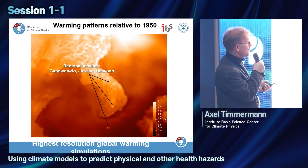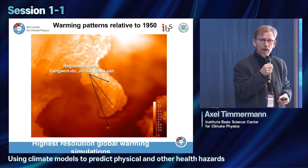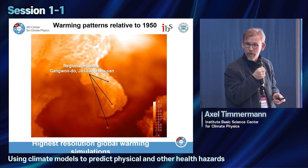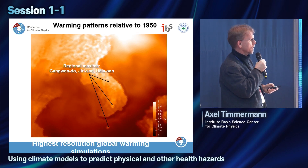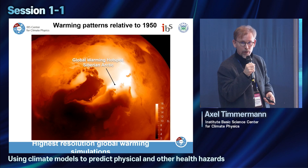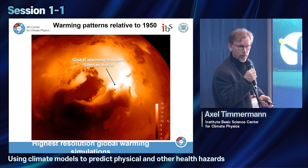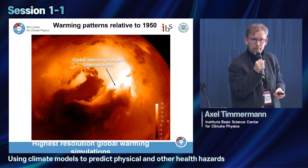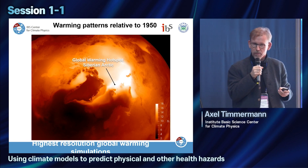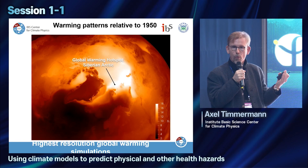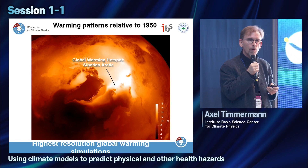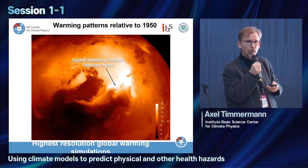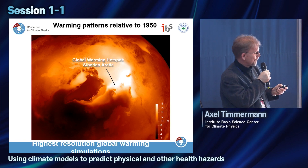You can see even Jiri and Jeju sticking out as warming hot spots, because the higher you go in elevation, the more warming there will be — an important effect affecting snow cover in the Himalayas. The Eastern Siberian Arctic will warm up by up to 18 degrees Celsius in this model simulation, a factor of three more than the global mean. So we have these regional patterns that need to be included in projections.